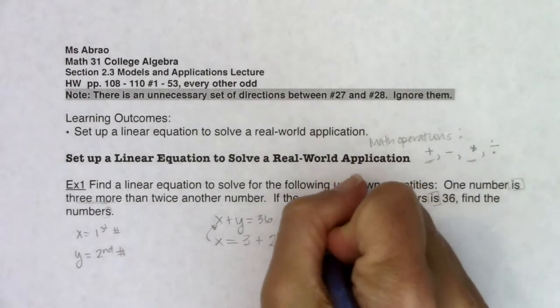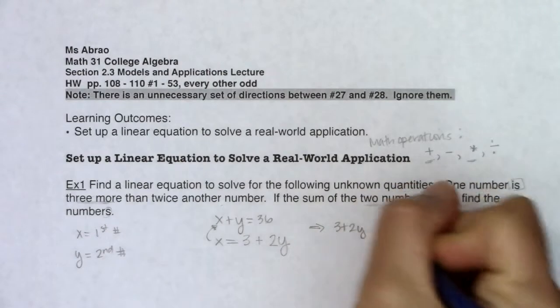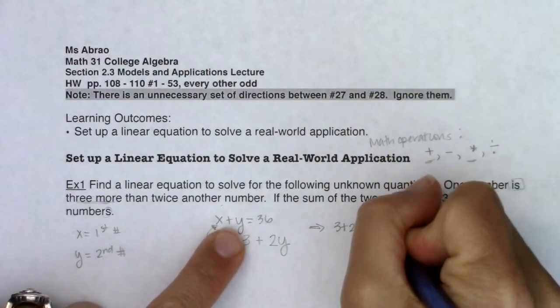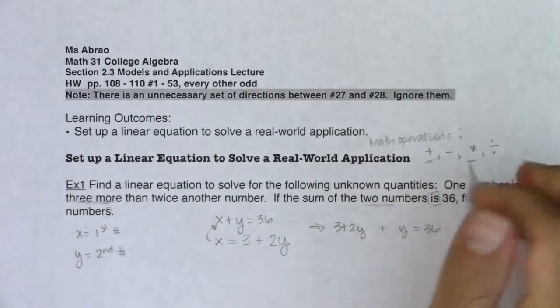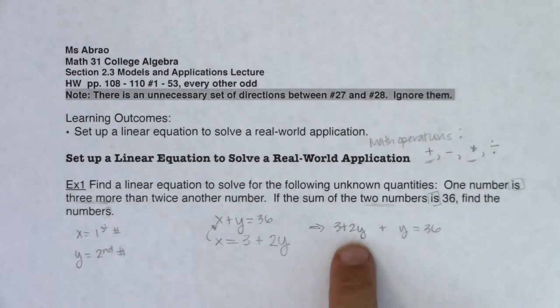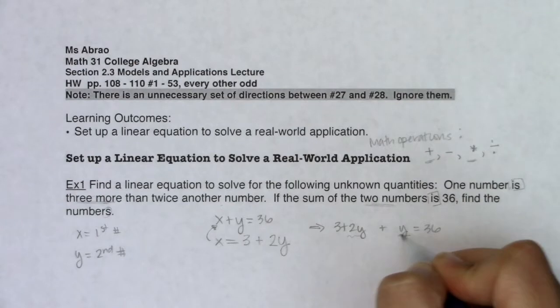Which means this equation will change to 3 plus 2y—that's x—plus y equals 36. Instead of x plus y, instead of x I'm literally writing what it's equal to: 3 plus 2y. Now it cuts down to I can simplify. I see y and 2y on this side, so I have 3 plus 3y equaling 36.